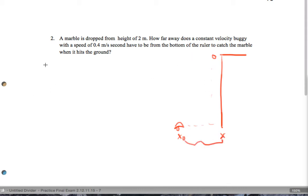Let's write down the equation for the car. We know the car is moving this way because it's a constant velocity buggy, so the buggy equation is going to be 0.4 times t.